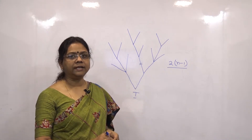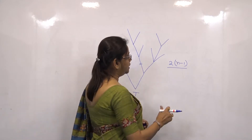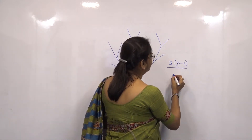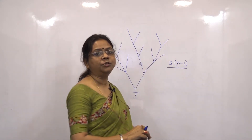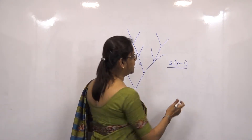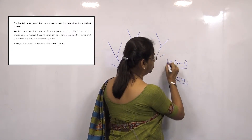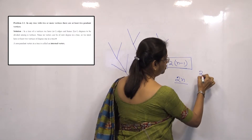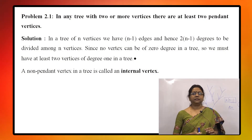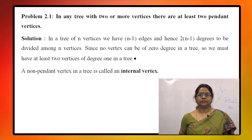There cannot be any vertex with degree 0. So if we consider that there is no pendant vertex, the minimum degree of each vertex is 2, then we require a minimum of 2n degrees, but we have only 2n-2 degrees. So 2 degrees are deficit. Therefore, all vertices cannot be of degree 2 — at least there are 2 vertices with degree 1.